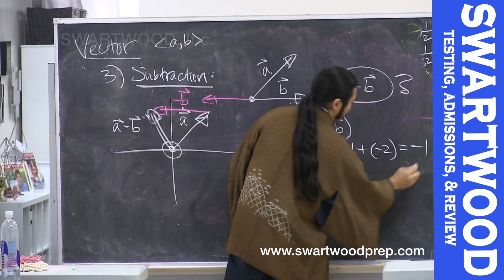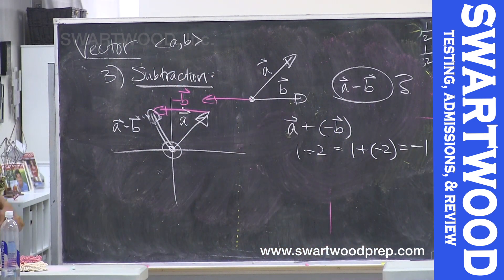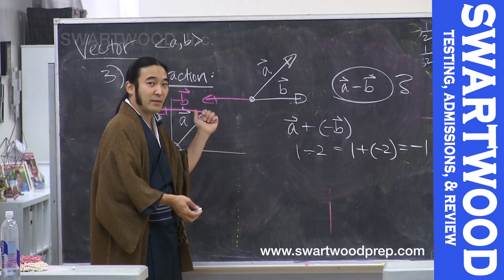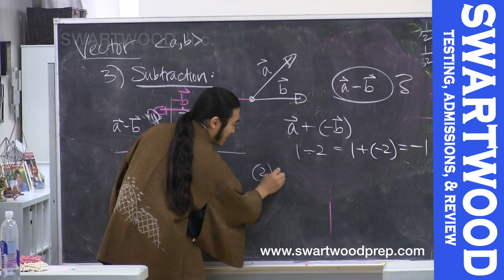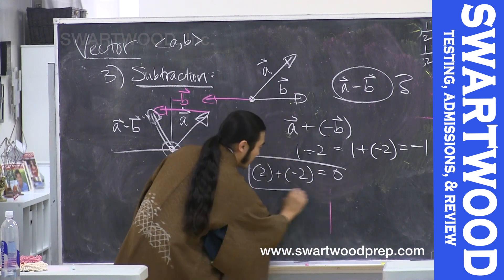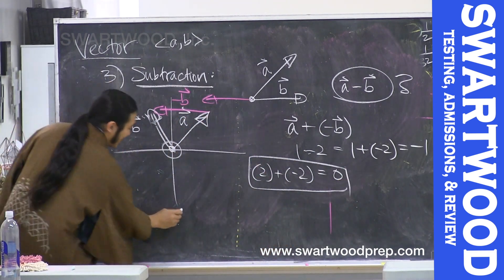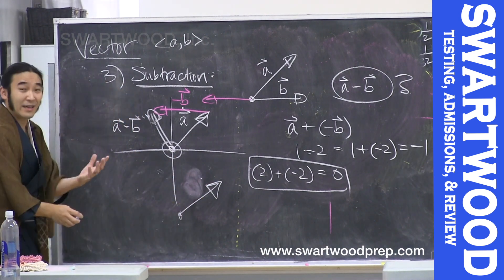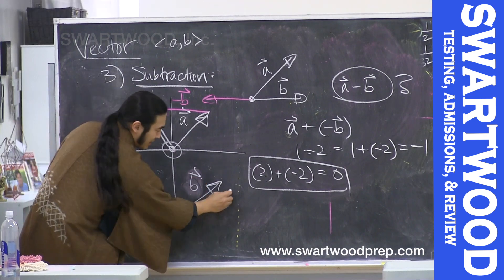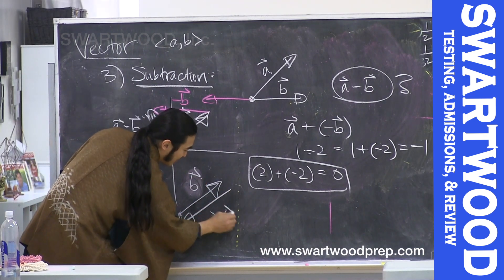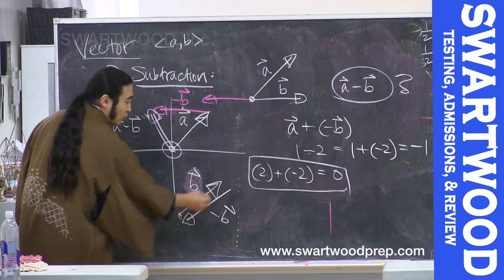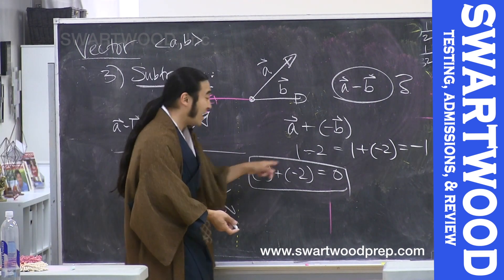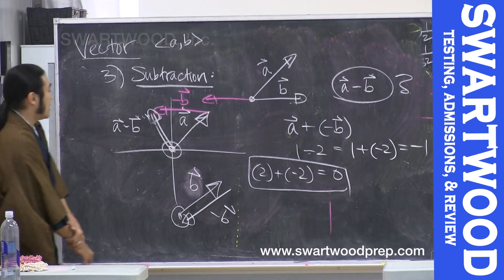This gives us inspiration for why we define negative b as the flip of b. In regular arithmetic, if you take 2 and add negative 2 you get zero. So if you take any vector and add its negative, you should get the zero vector. The only way that works is if you walk along b and then walk along the flip of b — same magnitude, opposite direction — so you start and end at the same place, giving zero.